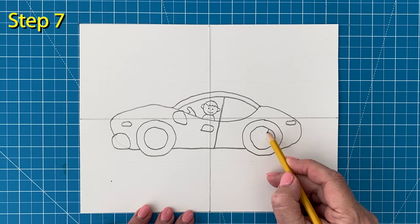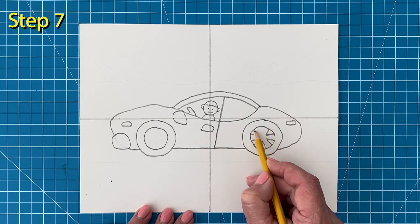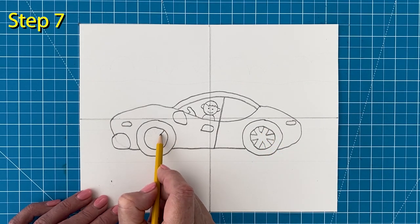Step number seven. Add about six triangles to the back wheel. And do the same for the front wheel.